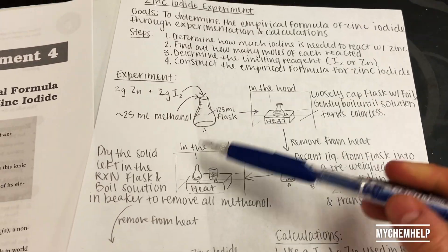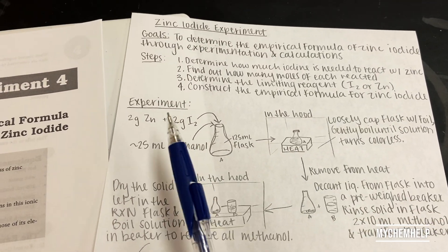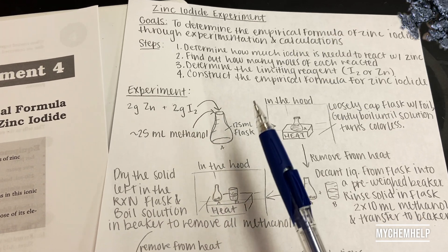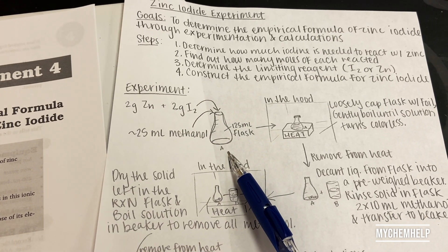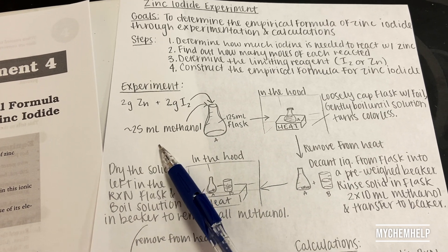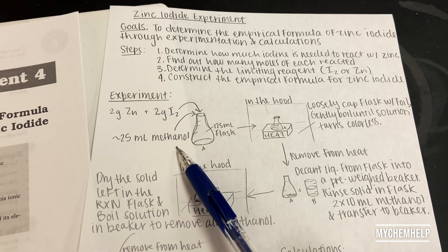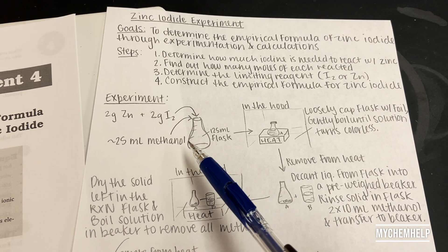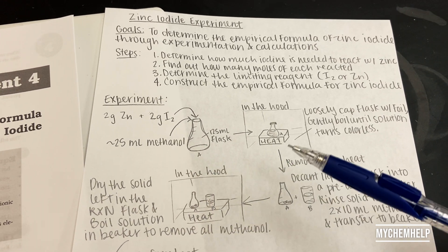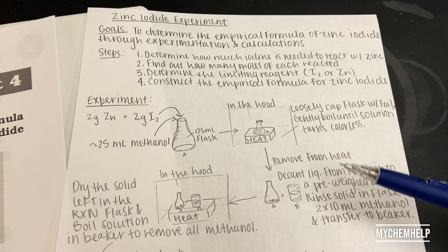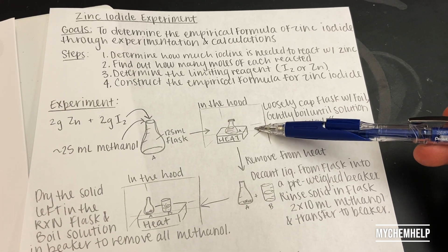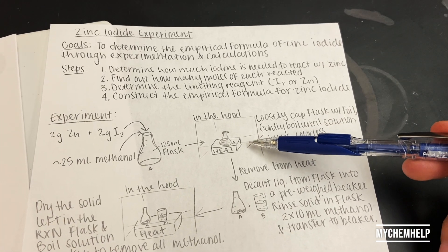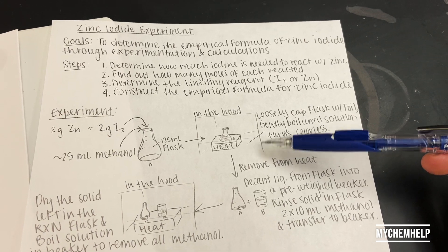The experiment looks like this: we're going to add about two grams of zinc and two grams of iodine into a flask with 25 milliliters of methanol. The methanol is not really involved in the reaction — it's just the vessel for the reaction to take place. I'm going to do this inside the hood because methanol is toxic.